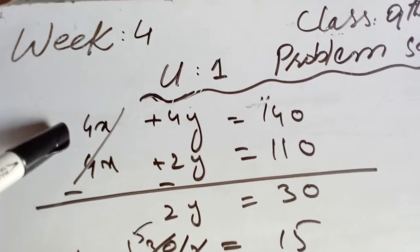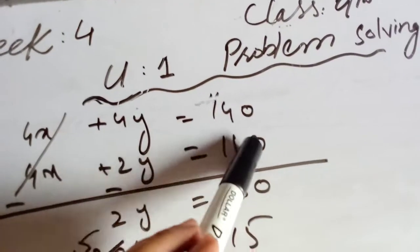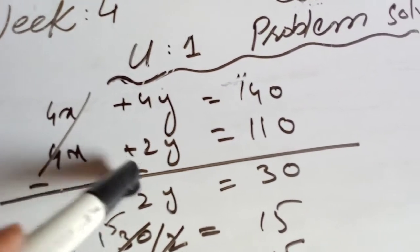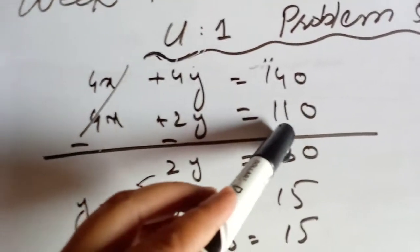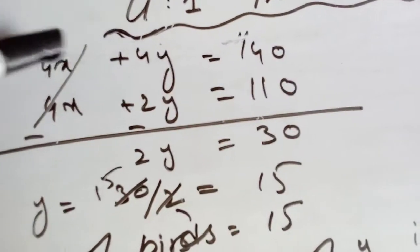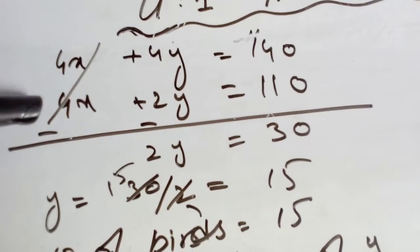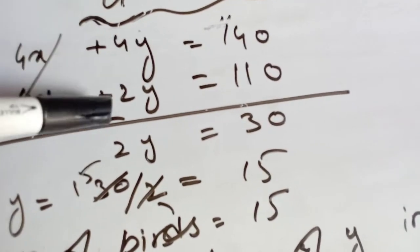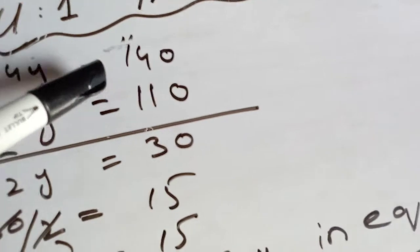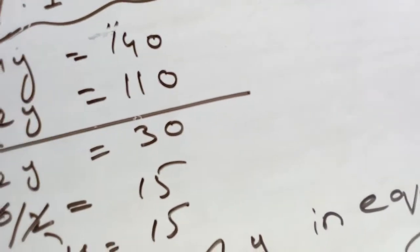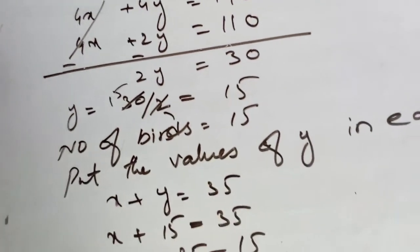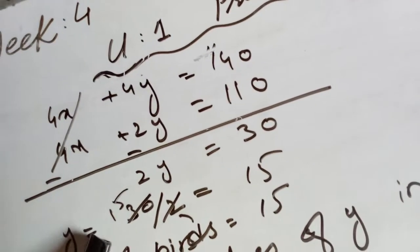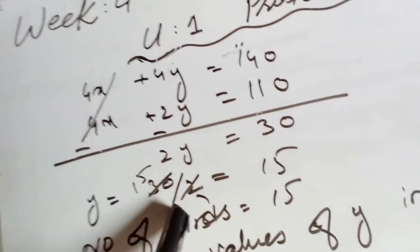4x plus 4y equals 140 — that is equation 3. Minus equation 2: 4x plus 2y equals 110. The 4x terms cancel. We get 4y minus 2y equals 140 minus 110, so 2y equals 30. Therefore y equals 30 over 2, which is 15.